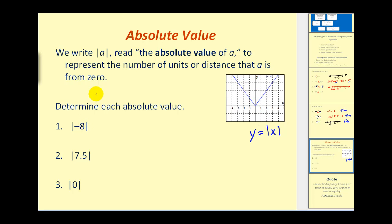So the absolute value of negative 8, how far is negative 8 from 0? It's 8 units from 0. And the absolute value of 7.5 is 7.5, and the absolute value of 0 is 0.